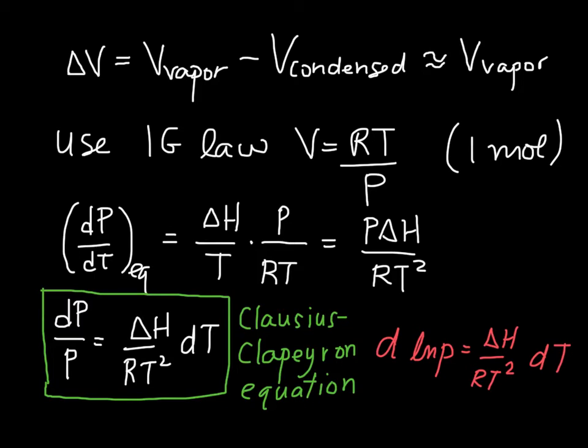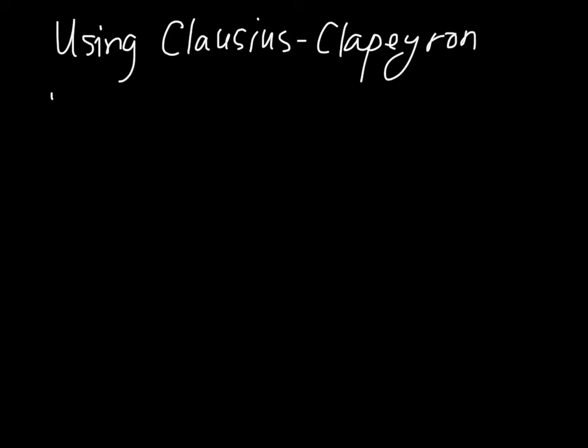So let's put this Clausius-Clapeyron equation to use a little bit and see how we can make it perhaps a little bit more user friendly. So we can consider a couple of different approximations here when we're trying to use the Clausius-Clapeyron. We'll consider a first case is that delta H, so the delta H of the transformation is independent of temperature.